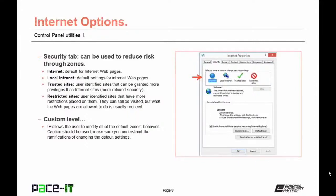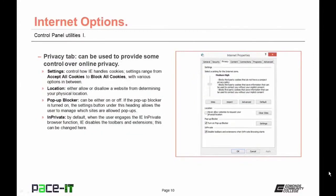You can set custom levels for each zone. Internet Explorer allows the user to modify all default behavior — caution should be used and make sure you understand the ramifications before changing default settings. The Privacy tab allows some control over online privacy. The Settings section allows control over how Internet Explorer handles cookies, ranging from accept all cookies to block all cookies with various options in between.